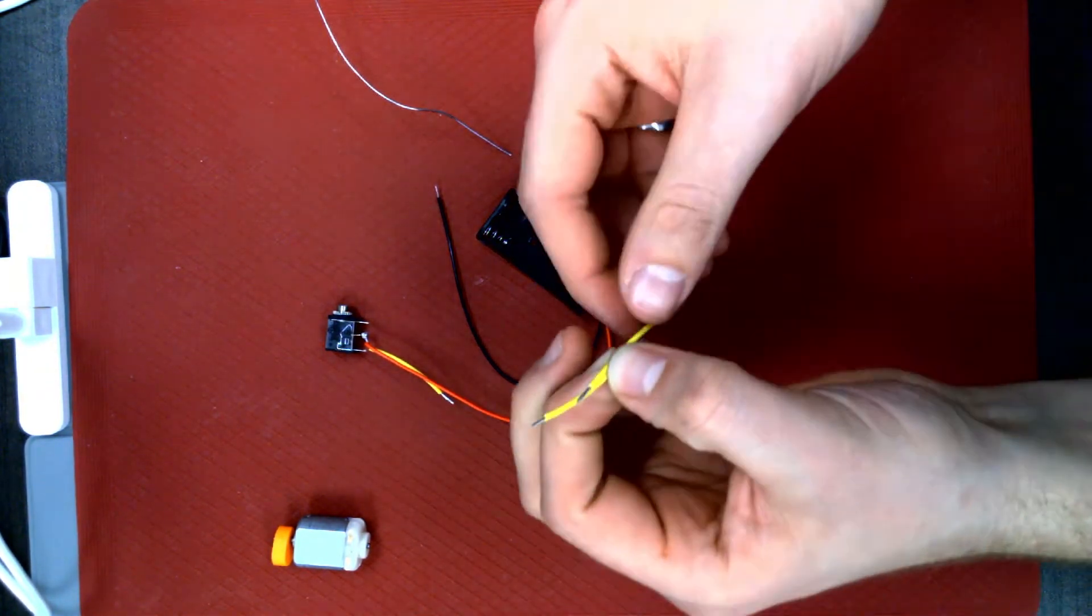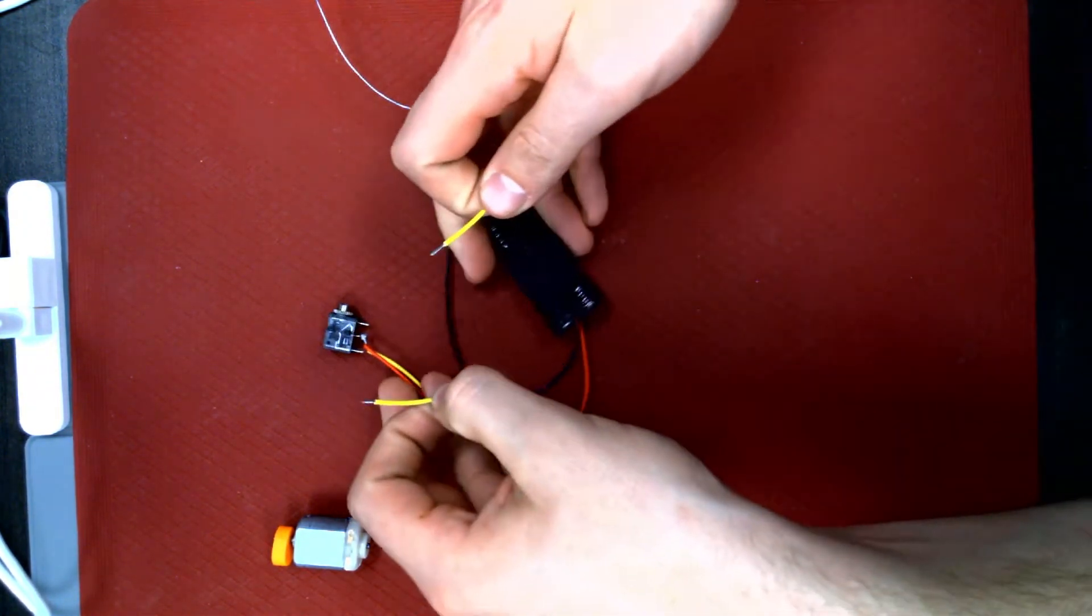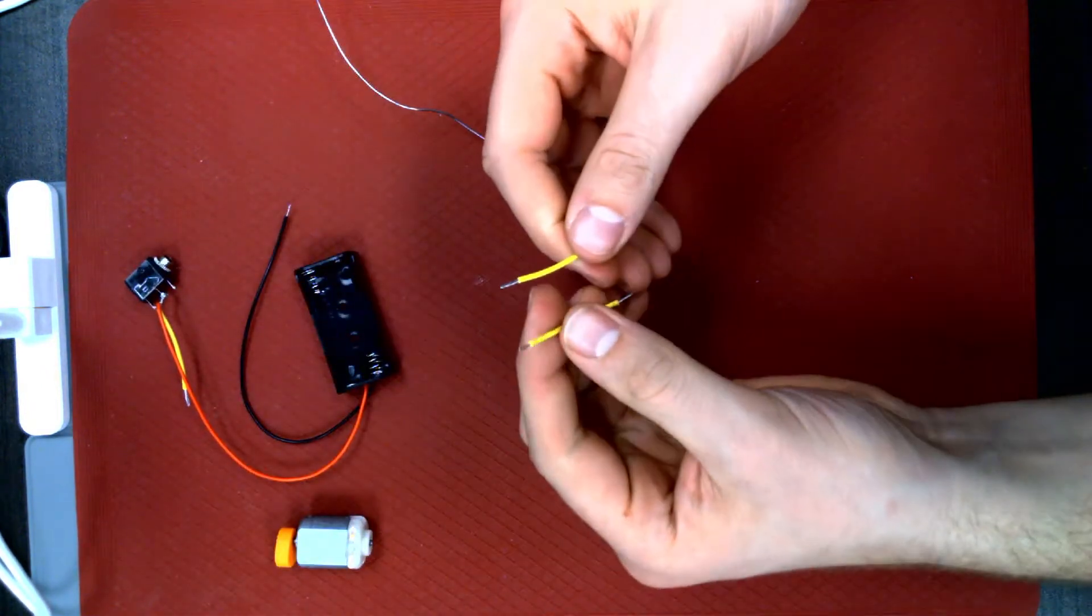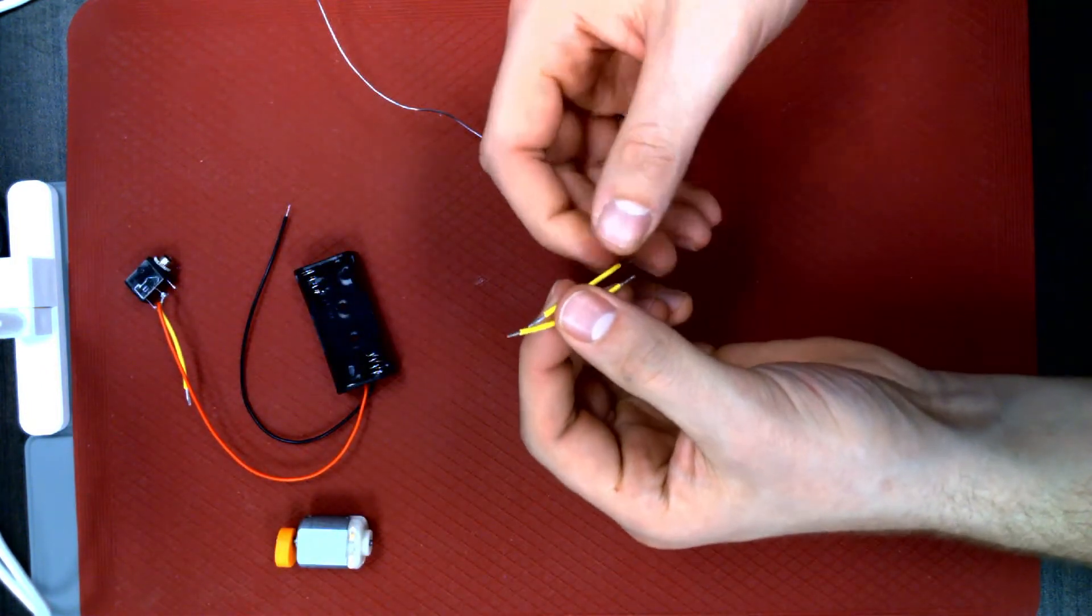Then, take the two remaining cut wires, twist together on one end to form a V shape, and solder them together.